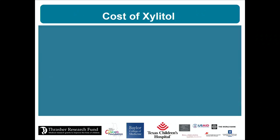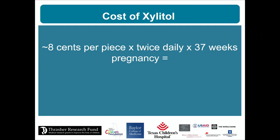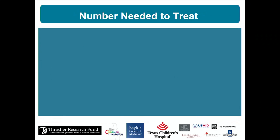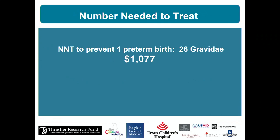What's the cost? If purchased at a convenience store or online, xylitol gum costs about eight cents a piece. Chewing twice daily for 37 weeks as in the PPAX trial comes to about $41 per person at retail price. A ministry of health buying in bulk could get it much cheaper — that's the highest price point.